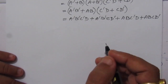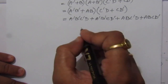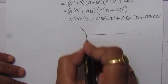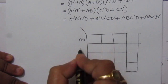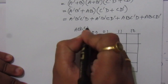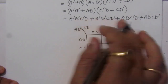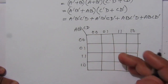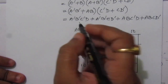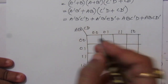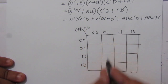Let us make the four-variable K-map. We need to place the minterms in the table. As we have seen in previous examples, Ā·B̄·C̄·D: Ā·B̄ is this row, C̄·D is this column, so we place a 1 there.